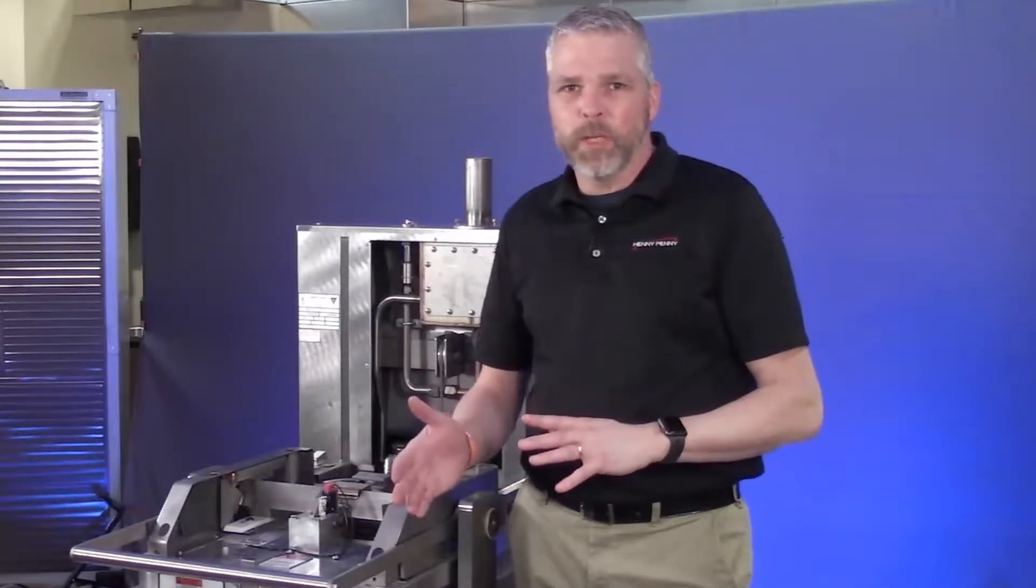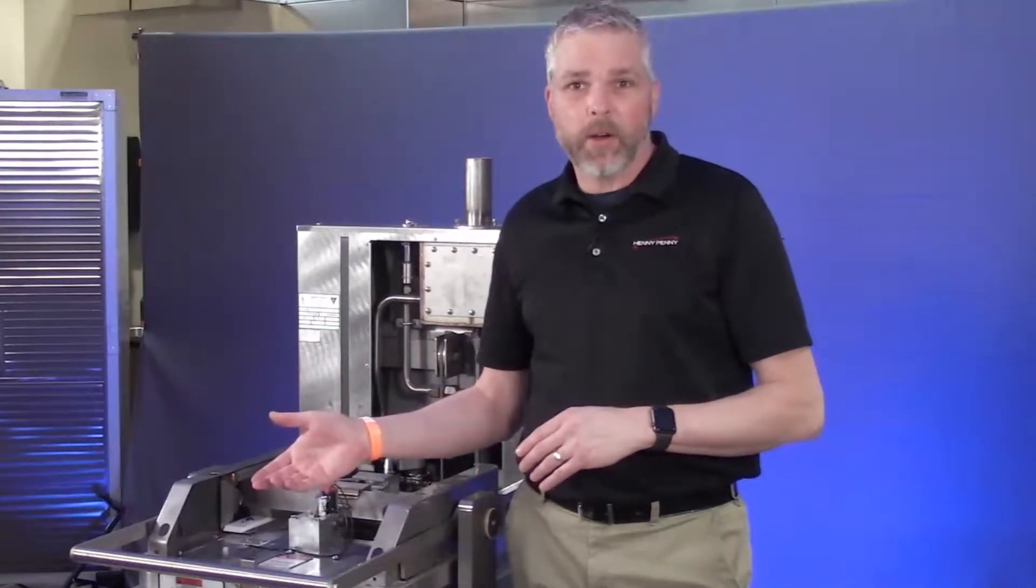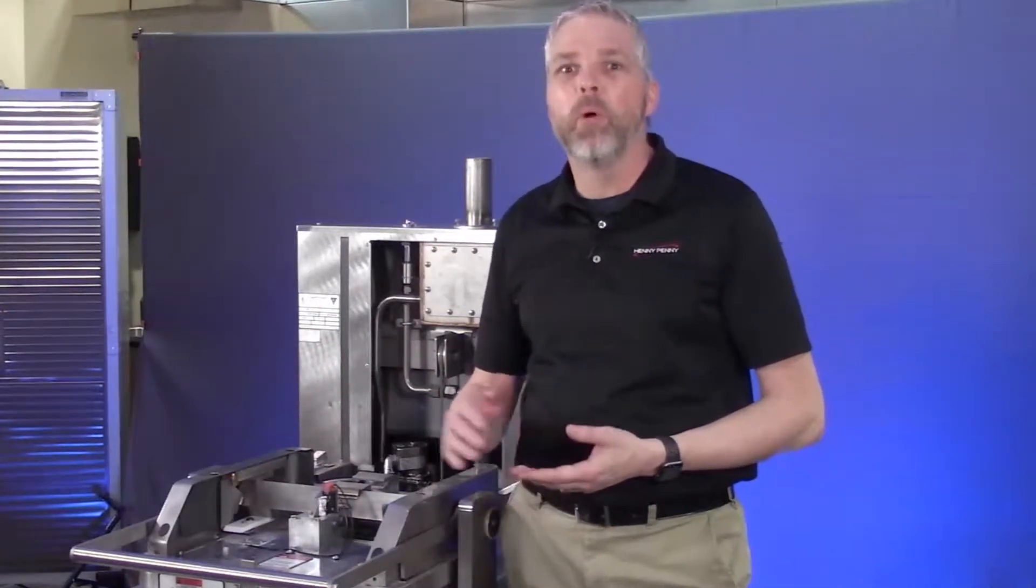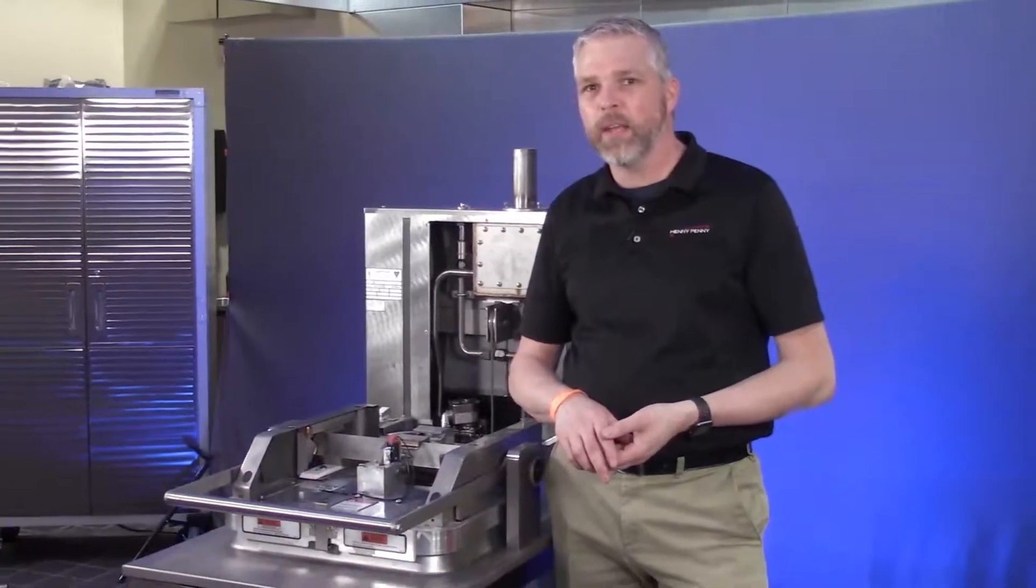In this video, we look at troubleshooting the E86B error, and that's pressure stuck on pole ring is what the control board is going to say.